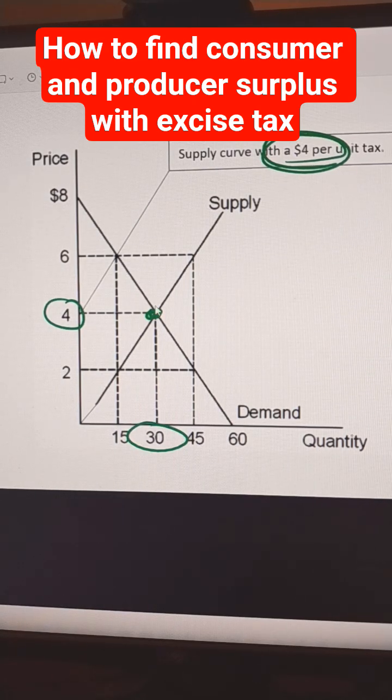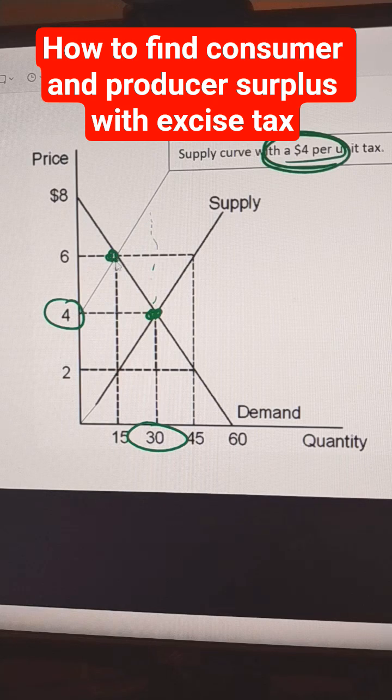But since there's a $4 tax, the supply curve shifts to the left by $4. So find where that meets demand, and it meets right here.